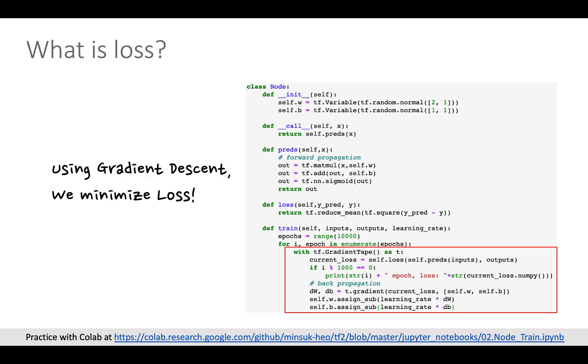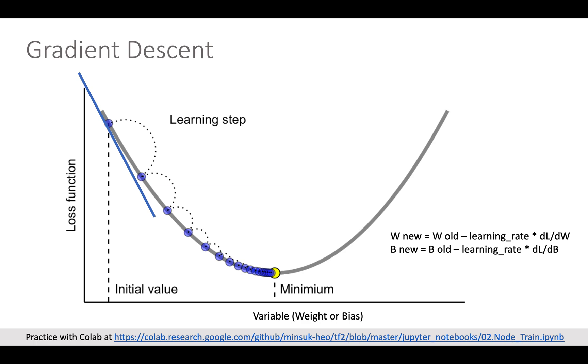And the gradient descent is the way to minimize loss. Here is a visualization how the gradient descent is working. Our objective is to have the least loss during training, which is the bottom of this bowl shape.